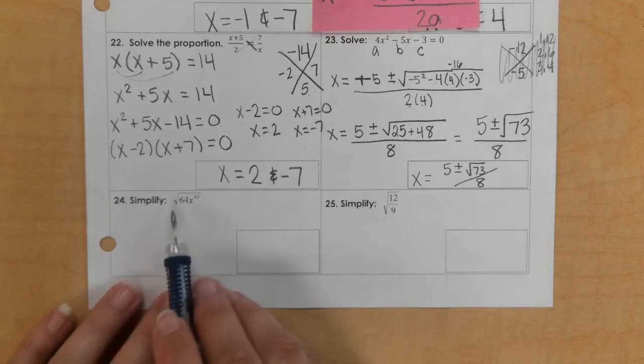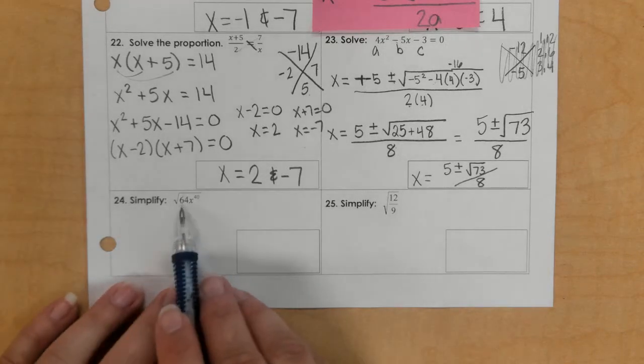Okay, for number 24, 64 is a perfect square, so the square root of 64 is 8.